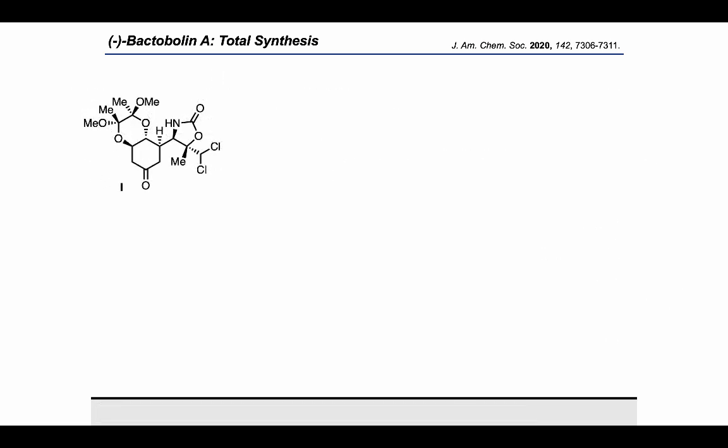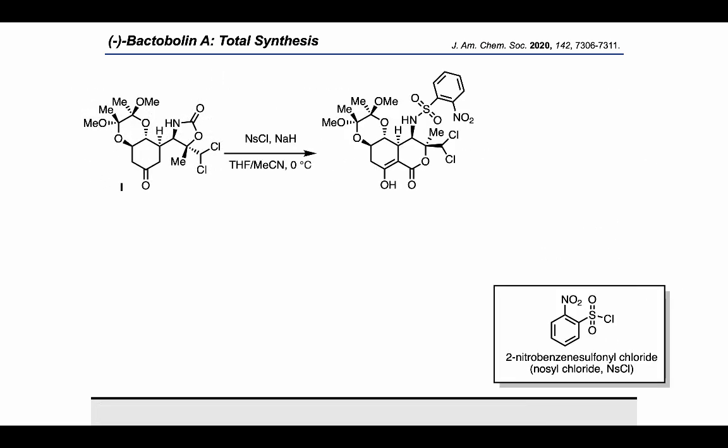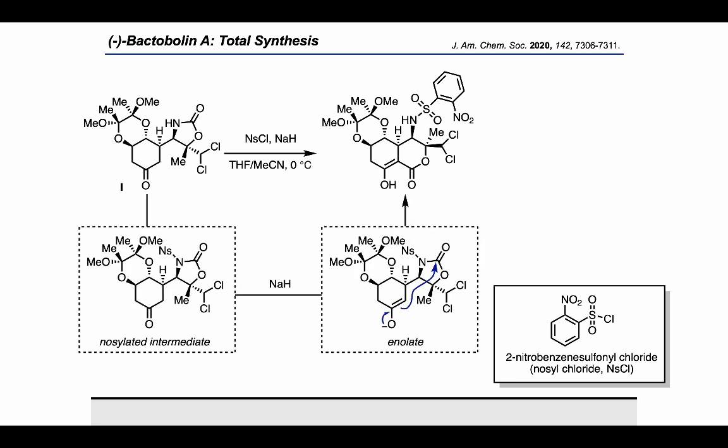Carrying on to the next step, they treated it with nosyl chloride and sodium hydride and were able to get the desired alkoxycarbonylation to occur. This happens by first activating the oxazolidinone with nosyl chloride, and then using sodium hydride to form an enolate that can react with the oxazolidinone to form a lactone.